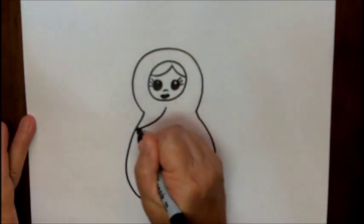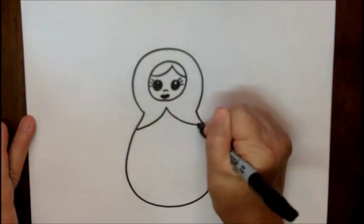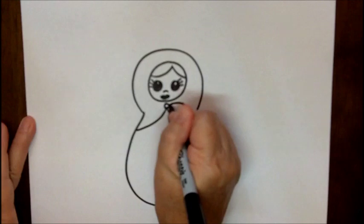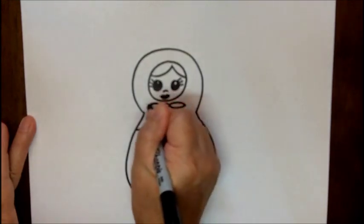Maybe we can put a little scarf on her with a little bow. So a little circle with some curved lines.